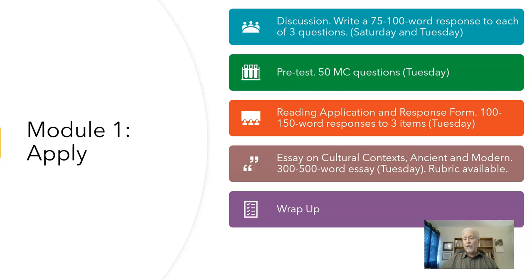There's also the Reading Application Response Forum, which has a link to a downloadable Microsoft Word document. You will be asked to write 100 to 150 word responses to three different items relevant to your readings this week. And then there's an essay on cultural context — ancient and modern — a 300 to 500 word essay, roughly one to one and a half pages, due at the end of the day on Tuesday, which is the end of this first module. A rubric is available at the assignment site — you'll want to download it, as it will be the basis for grading your essay.